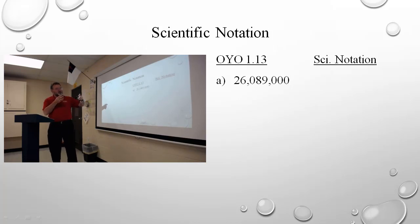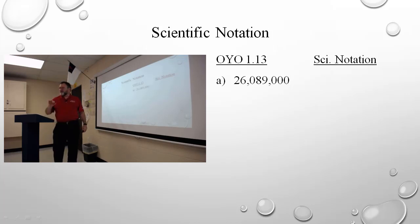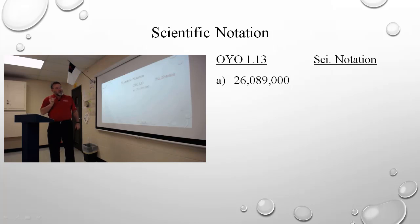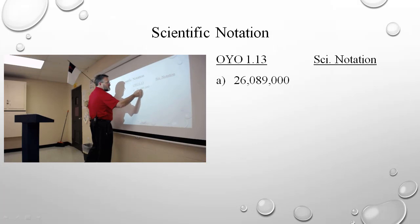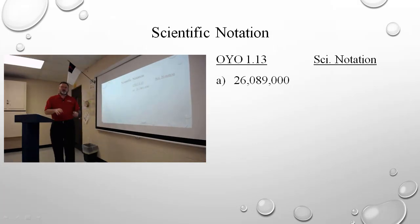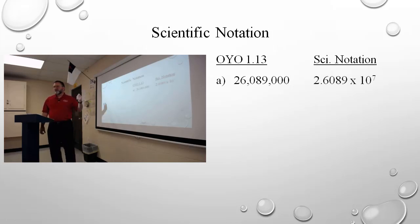I'm going to represent this number in scientific notation. I can see right now that the 2, the 6, the 8, the 9, and the intermediary 0 are all significant. The trailing zeros don't count. So my answer has to have a 2, 6, 0, 8, 9 in it. The decimal has to be after the first non-zero digit, which is the 2, between the 2 and the 6. And I've got to move the decimal one, two, three, four, five, six, seven places. It's going to look like a smaller number, therefore my exponent has to be larger by 7. So: 2.6089 times ten to the seventh.